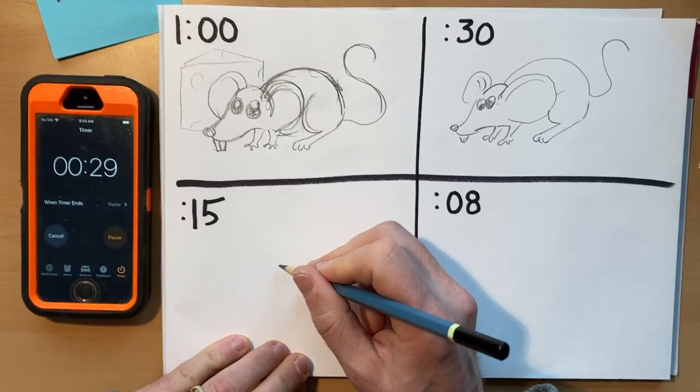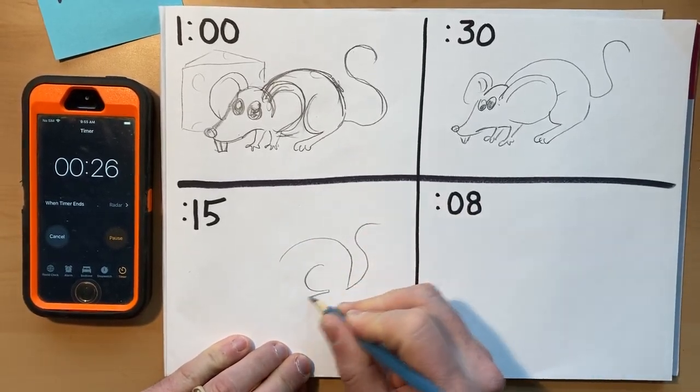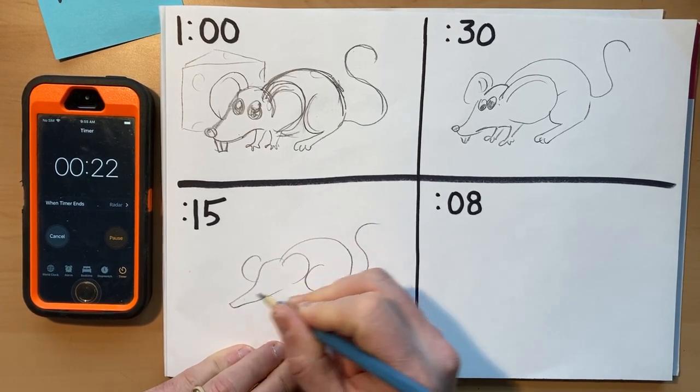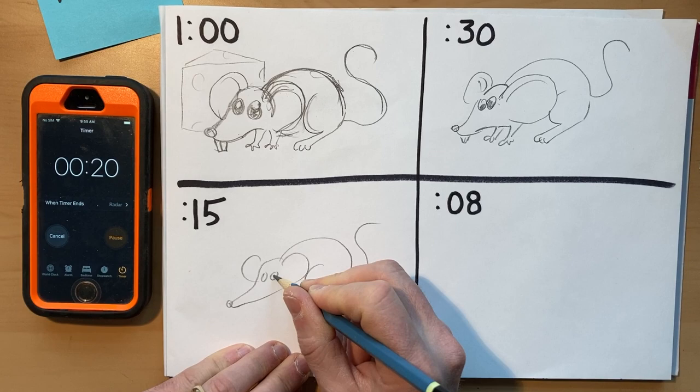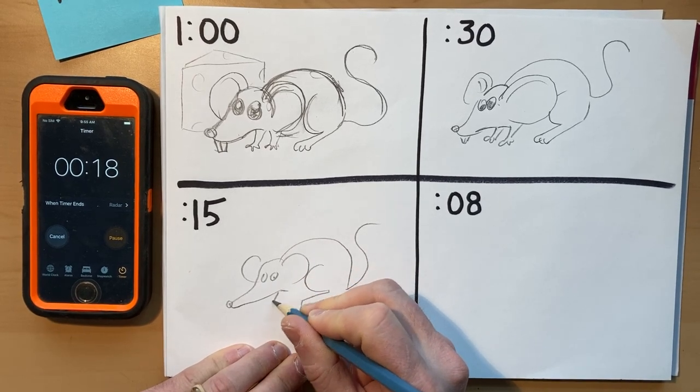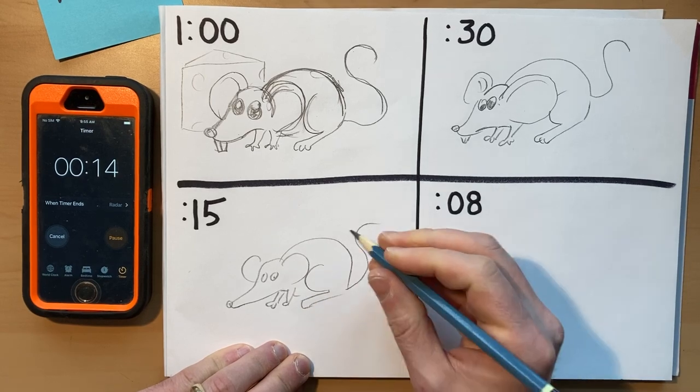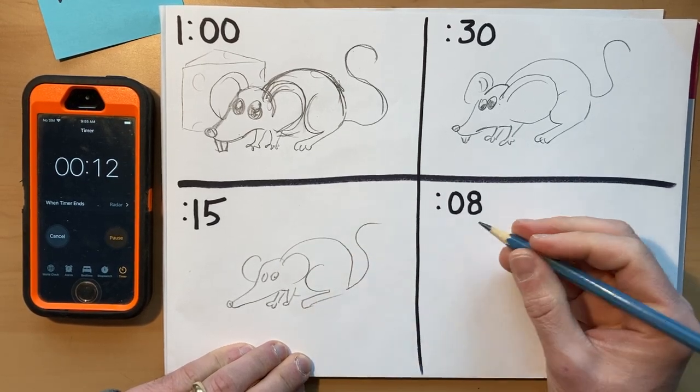15 seconds. Mouse. Don't panic. Ear, ear, head with a basic. Oh no, I turned it into an elephant. Oh my word. Wait, I forget what time I'm at. I think that's it.